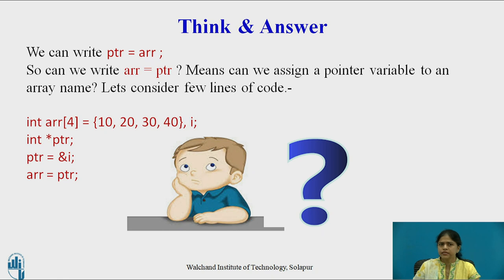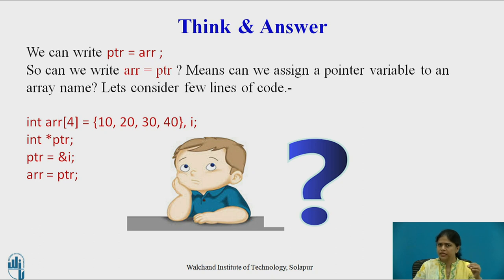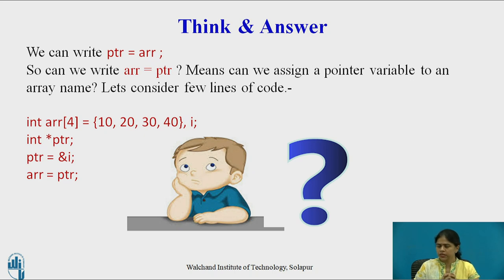As we said, the name of the array is actually a pointer that points to the first element. So we could assign the name of the array to PTR: PTR equals ARR. PTR is an integer pointer and ARR is an integer array, so we are assigning the base address of the array to the integer pointer. Now, think for a while: can we write ARR equals PTR? Can we assign a pointer variable to an array name?